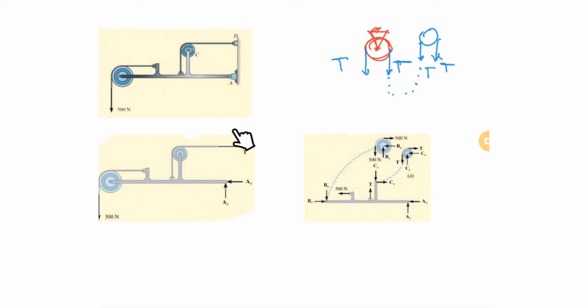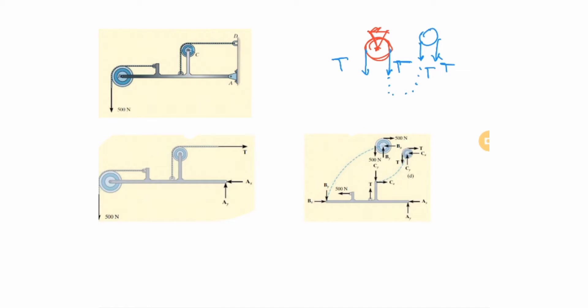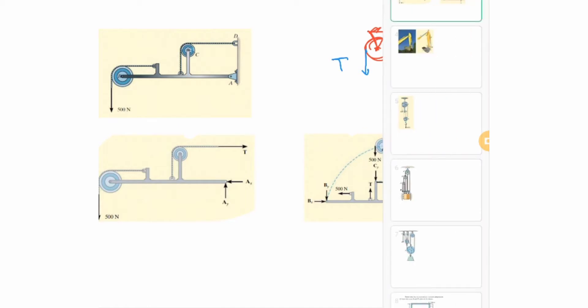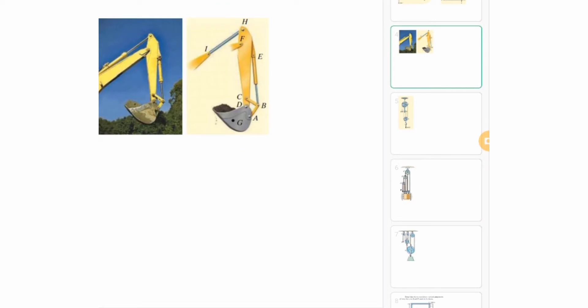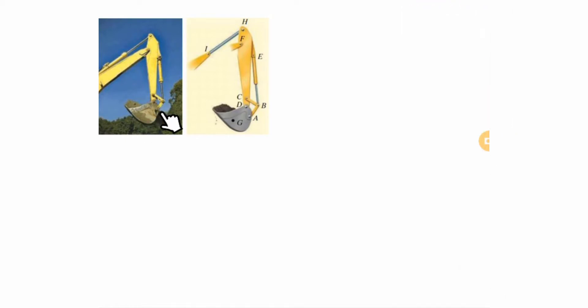My approach is: do the whole-body free body diagram first, solve what you can, then go deeper and deeper to find the unknowns for the individual parts. Now let me show you another example — an excavator with several links — and the first thing to identify is the two-force members, which is critical in these problems.